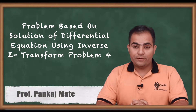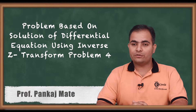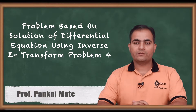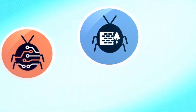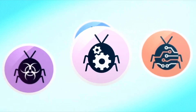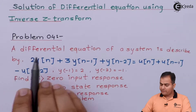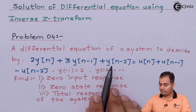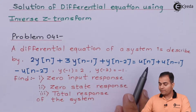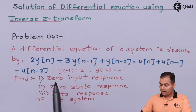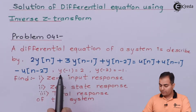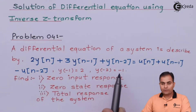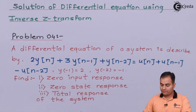Today we are going to study problem number four, which is based on the solution of a differential equation using inverse Z-transform. The differential equation of the system is: 2y(n) + 3y(n-1) + y(n-2) = u(n) + u(n-1) - u(n-2), with initial conditions y(-1) = 2 and y(-2) = -1. We need to calculate the zero input response, zero state response, and total response of the system.